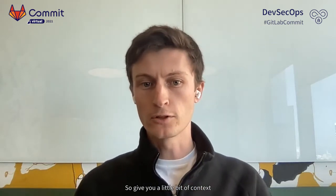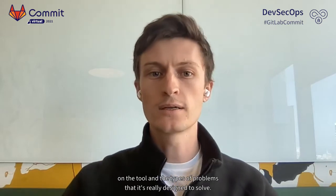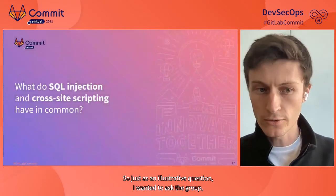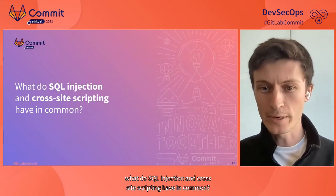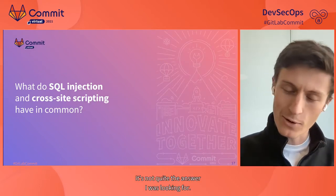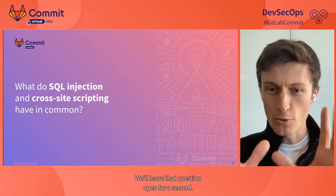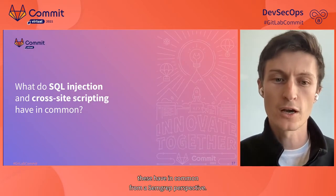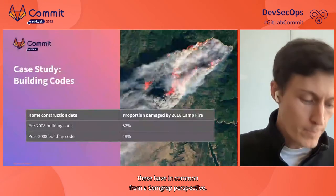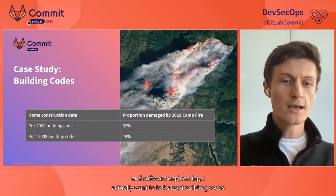Great, thank you Taylor — I really appreciate it. Hello everyone. I wanted to spend our time together to talk through Semgrep both within GitLab and outside of it, to give you context on the tool and the types of problems it's really designed to solve. As an illustrative question: what do SQL injection and cross-site scripting have in common? They're obviously both vulnerability classes — but that's not quite the answer I'm looking for. I'll leave that question open for a second and share a story that provides a little bit of detail on what these have in common from a Semgrep perspective.